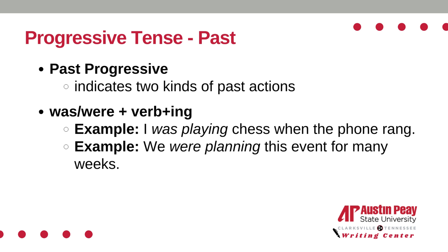The past progressive tense indicates two kinds of past actions. It creates the sense that an action occurred over a period of time in the past. It can be created by writing the words was or were, plus the verb, plus the suffix -ing. For example: I was playing chess when the phone rang, or we were planning this event for many weeks.